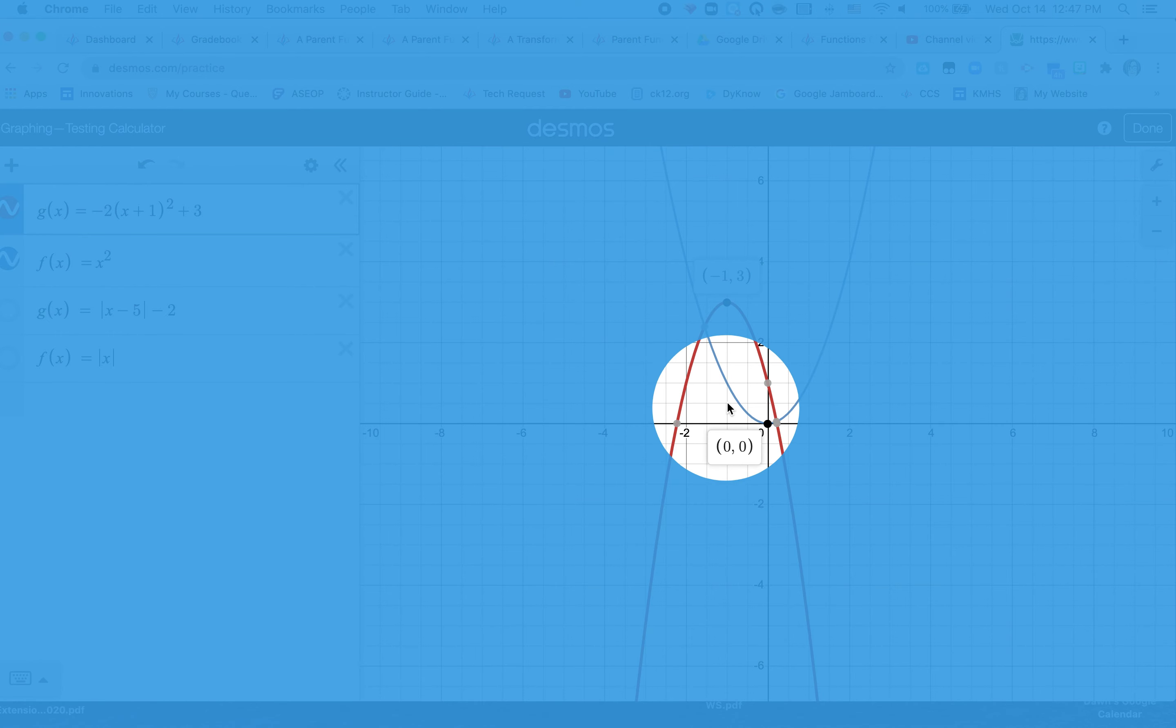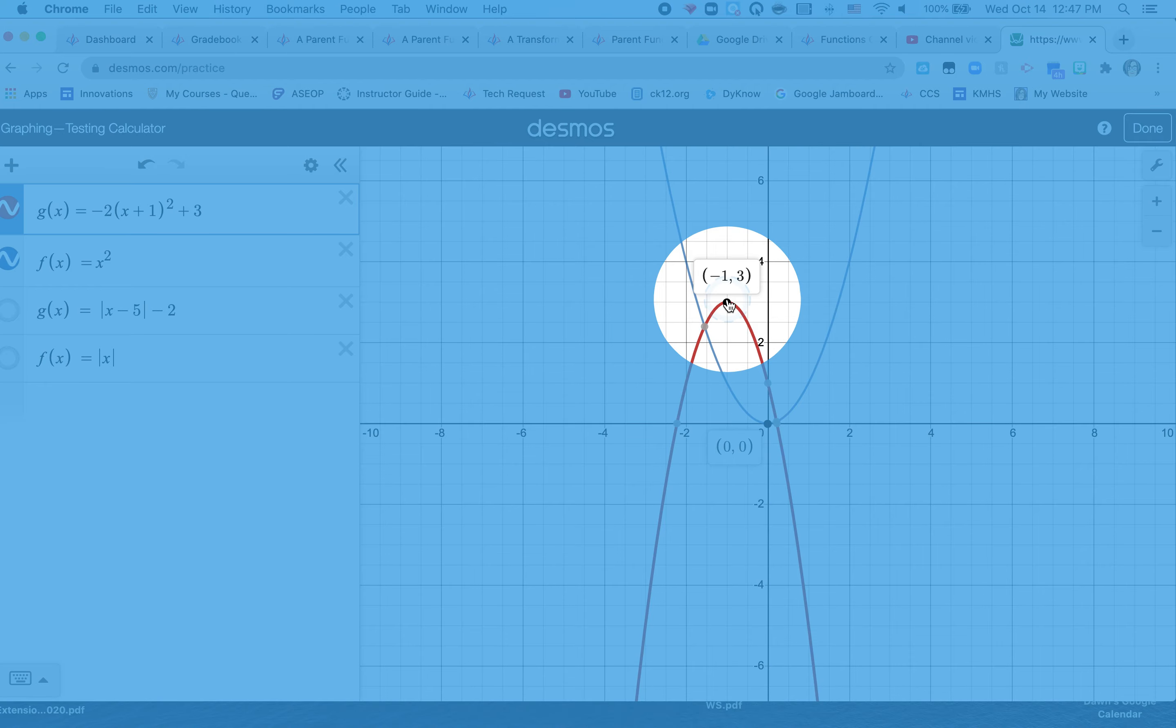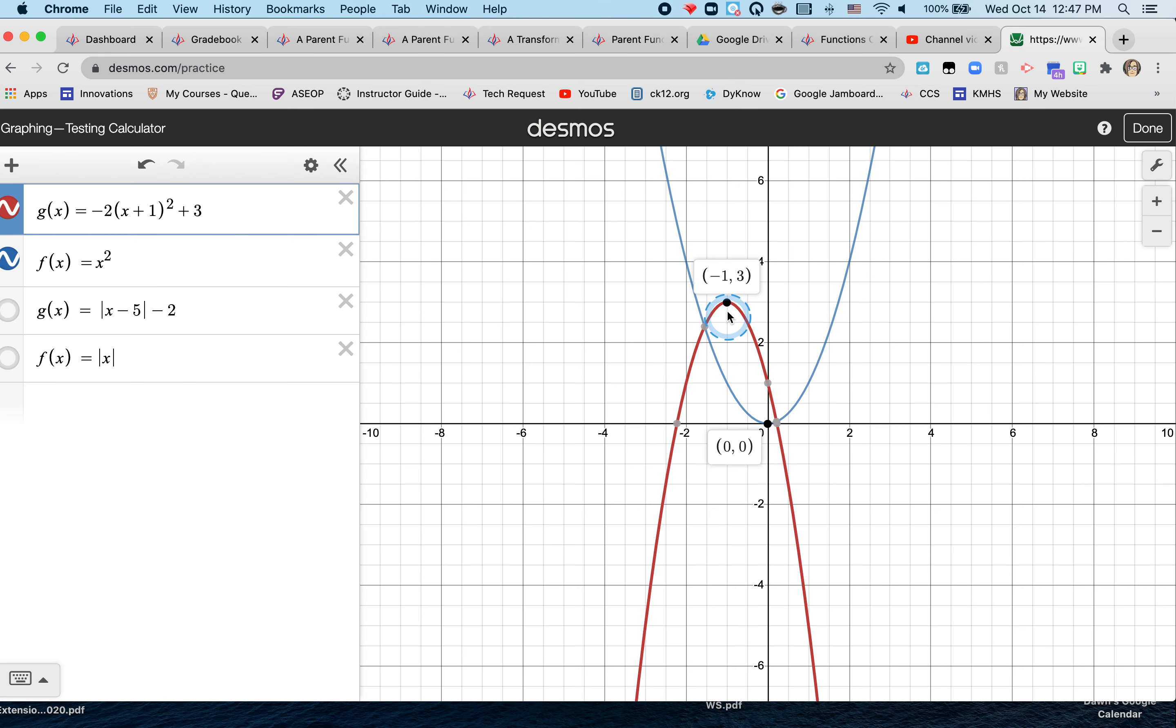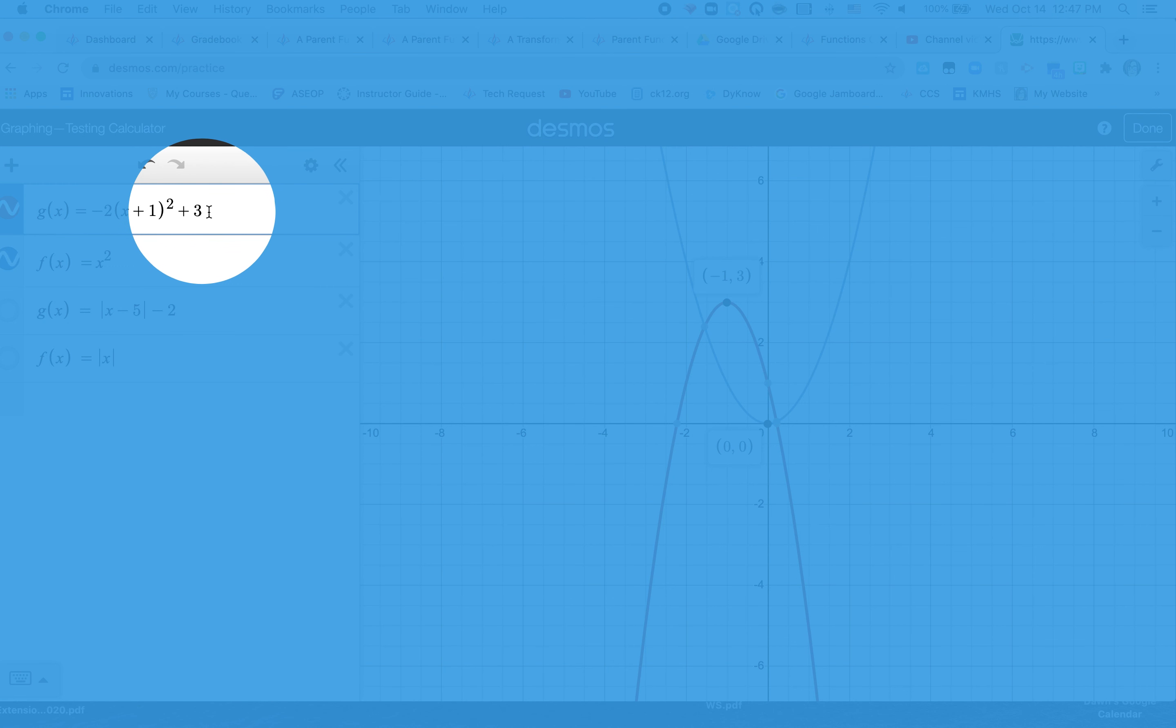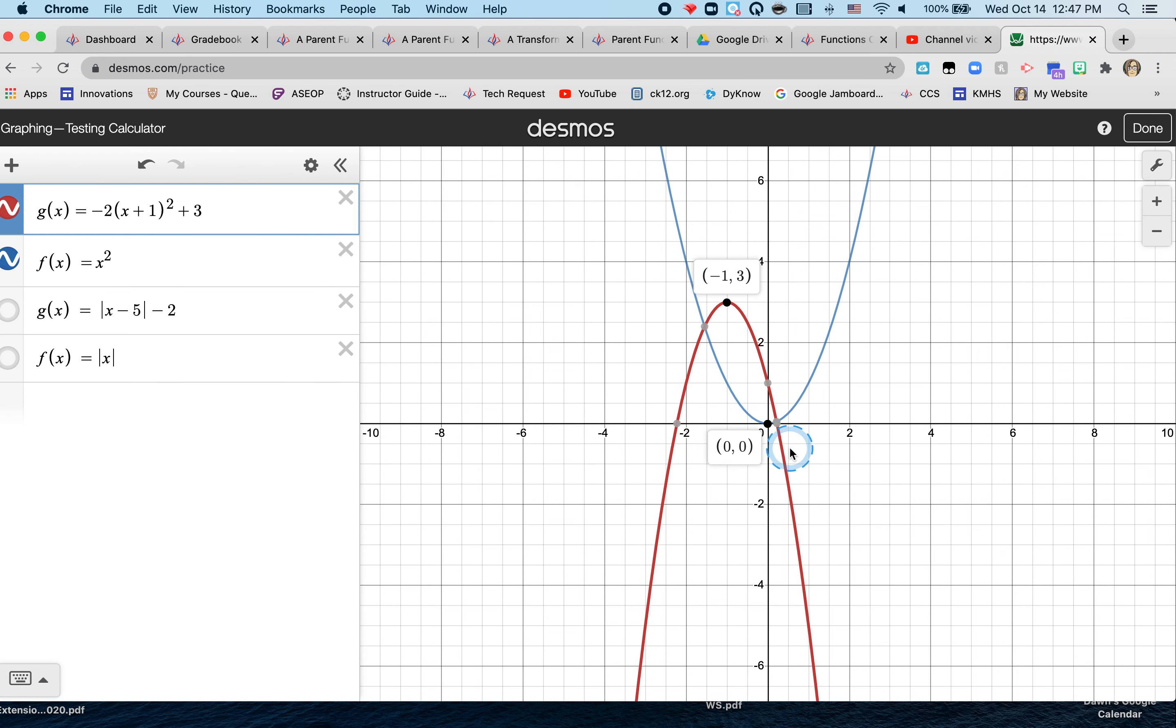And how many does it go up from (0, 0)? My y value is 3. So it goes up 3. So that's my plus 3 over here. So I've got my transformation left, my shift left, and my change up 3.